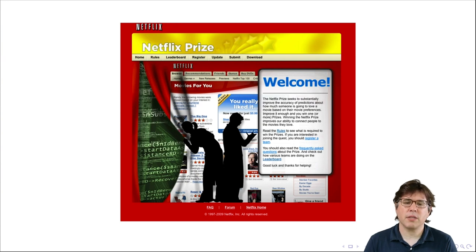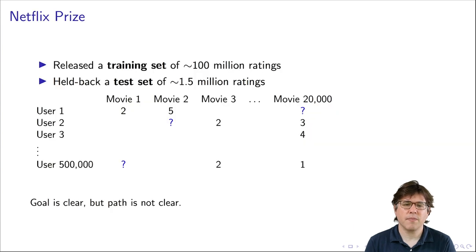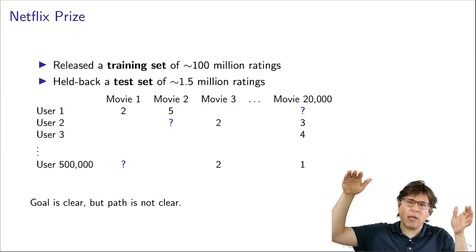One example is a project called the Netflix Prize that was run by Netflix. And it was trying to develop a better algorithm to recommend movies to their viewers. Netflix in-house researchers had been working on this problem for a while, but their progress had stalled. And so they said, let's open this up to outsiders and see if some other people can come up with a better way of doing this. So what they did is they released a training set of about 100 million movie ratings. And then they held back 1.5 million movie ratings as a test set.